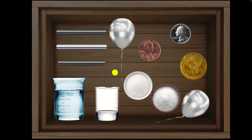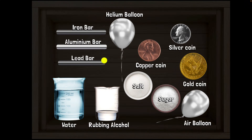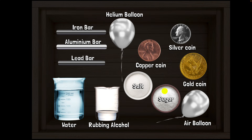You have a box of various things with you: some metallic rods, some liquids, balloons, coins, and even salt and sugar. And you have a baby brother who doesn't know the names of any of these. Now your task is to instruct him to get particular things from the box. How would you do that? Think about it for a while.